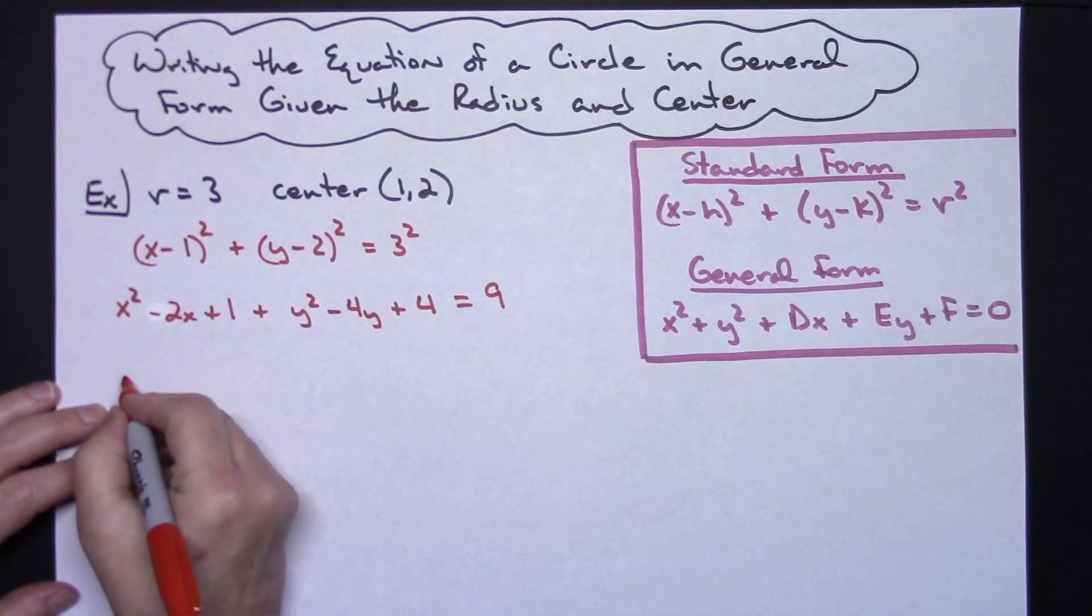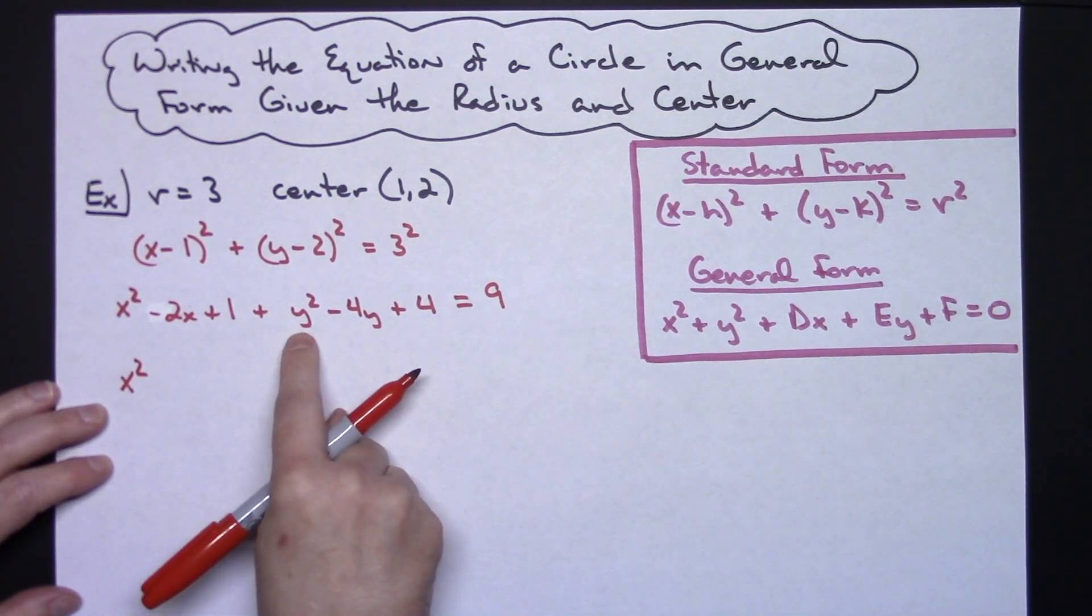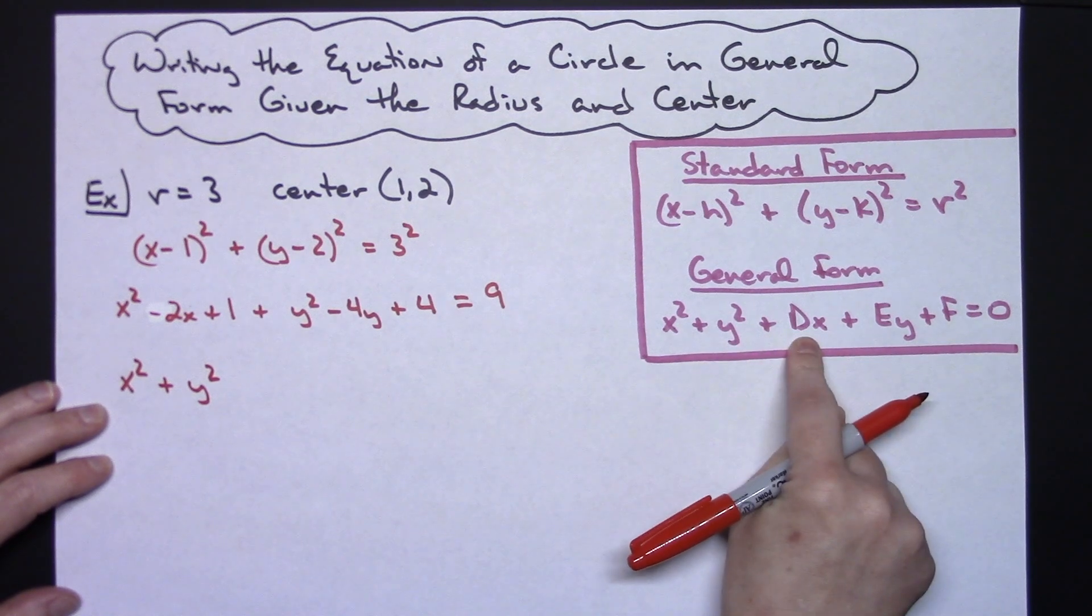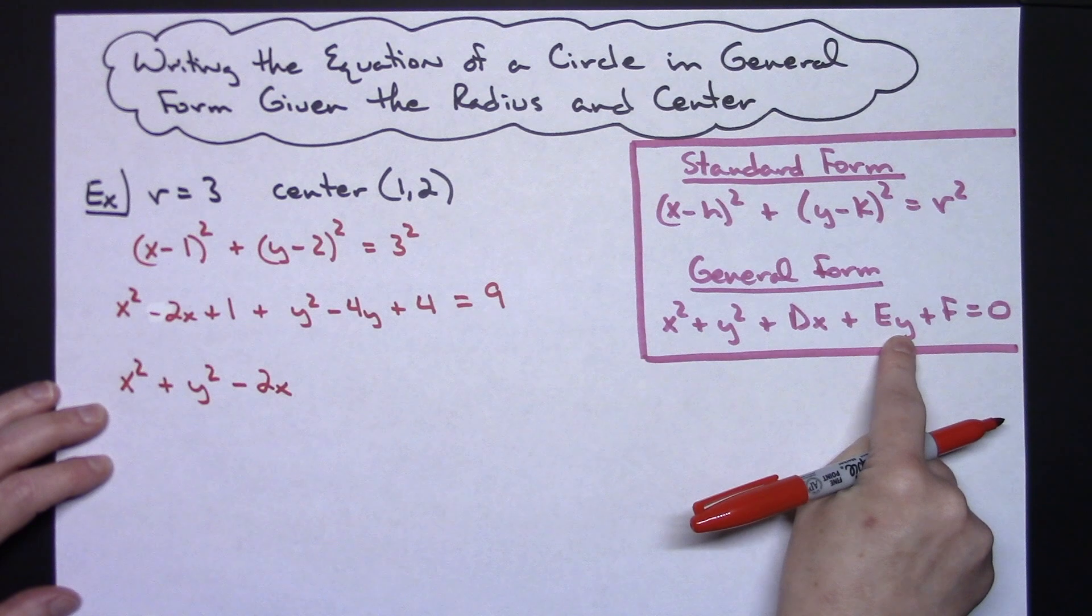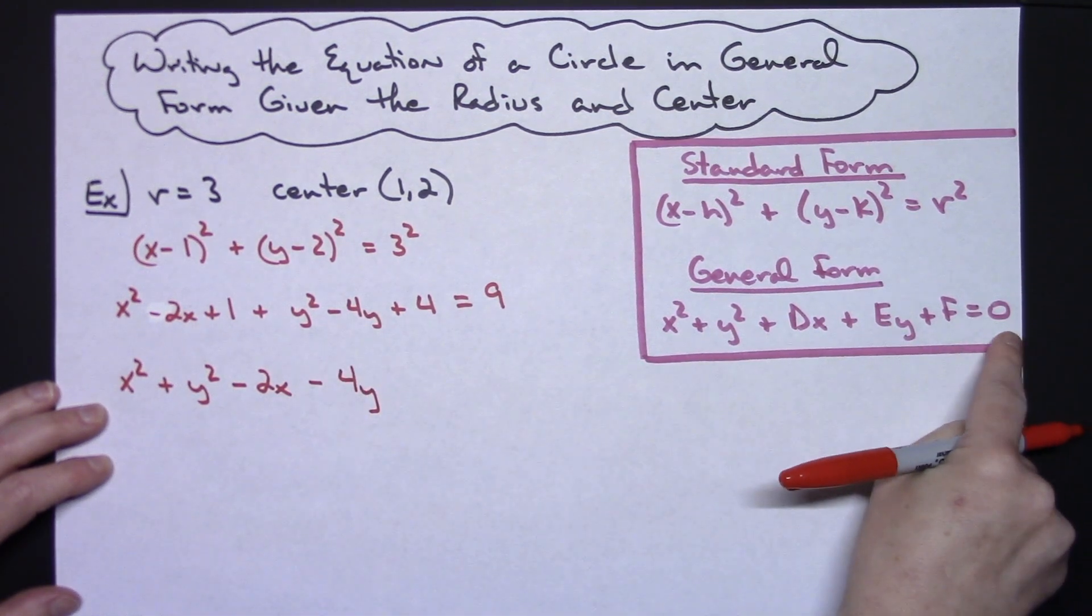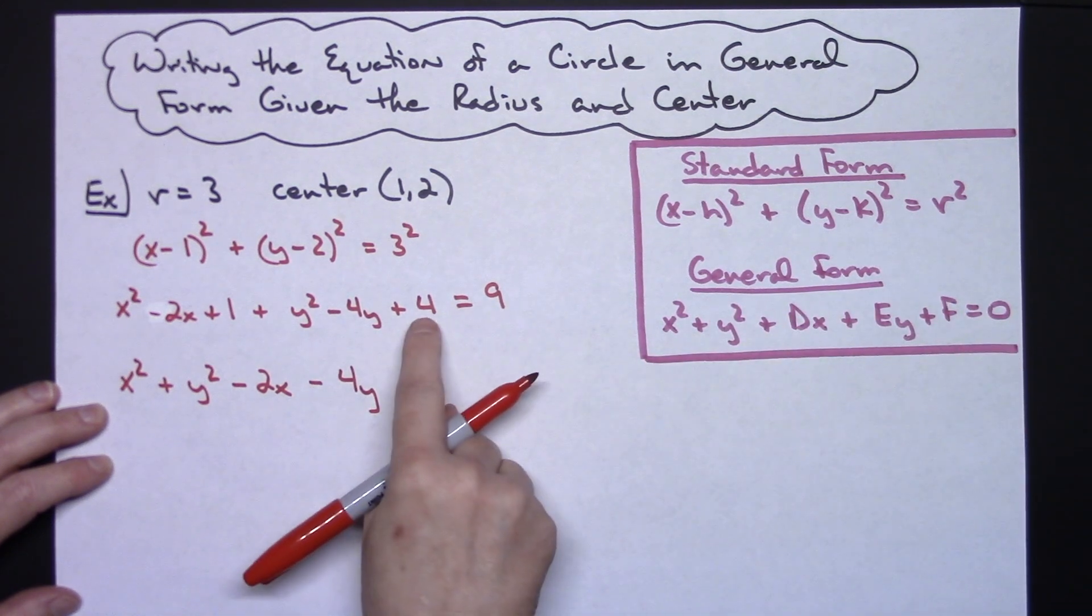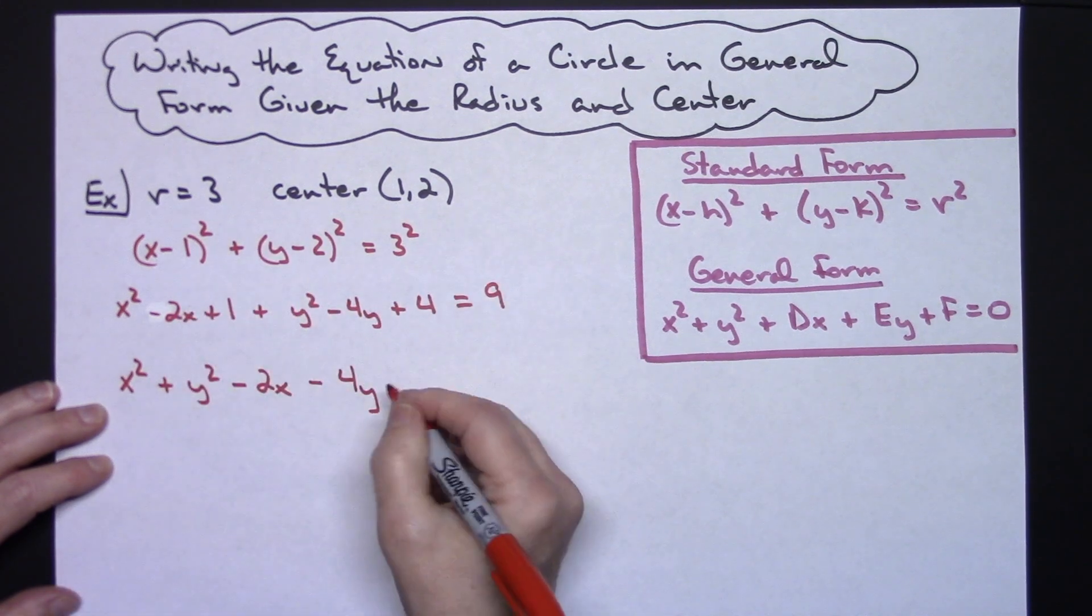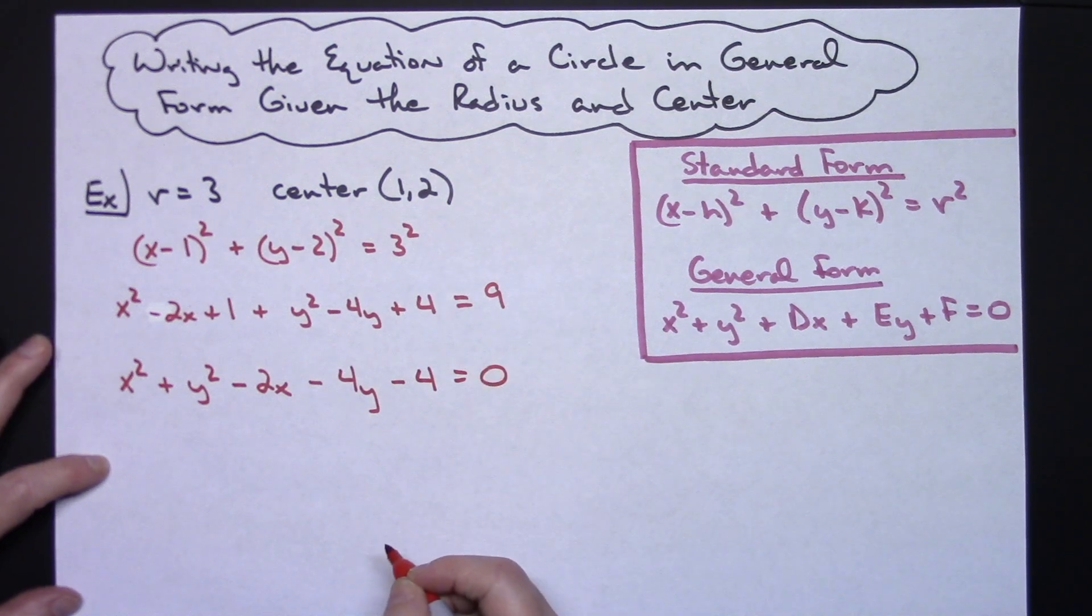I need my x squared term first so I'll have an x squared. I need my y squared term next so a plus y squared. I need my x term which is a minus 2x. I need my y term which is a minus 4y. And then I need to make sure that everything is on the left hand side and it equals 0. So I have a 4 plus 1 is going to be 5. Subtract 9 from both sides I'll have a minus 4 is equal to 0.